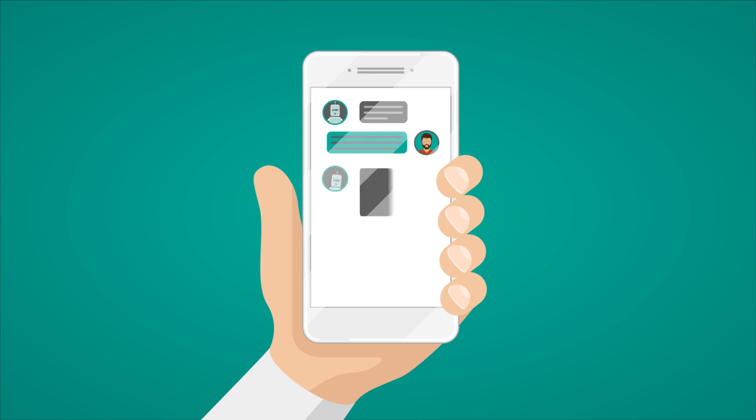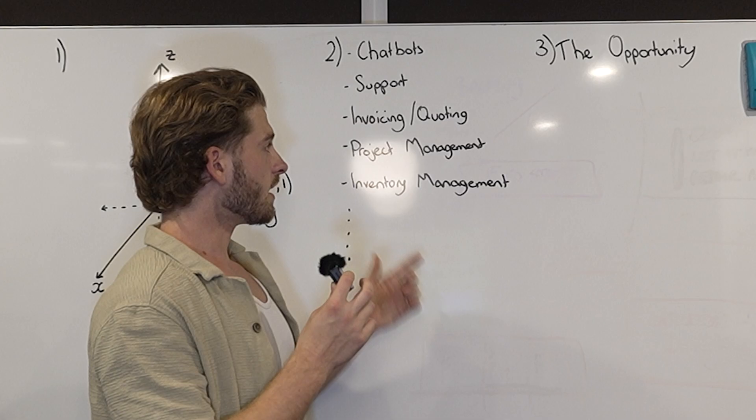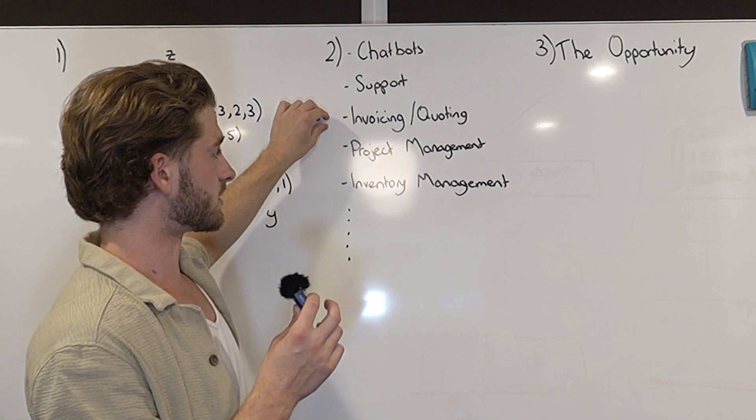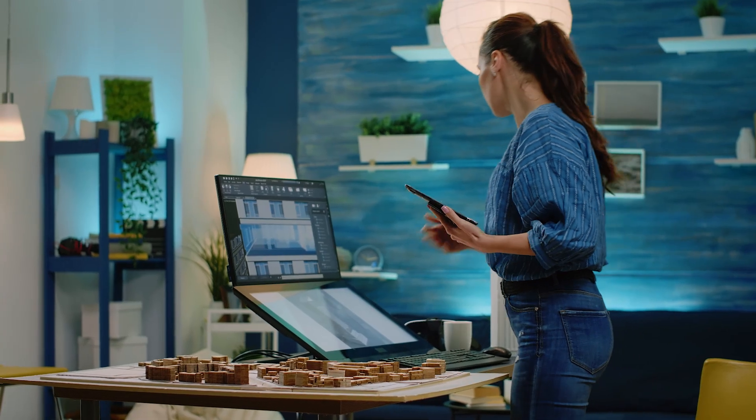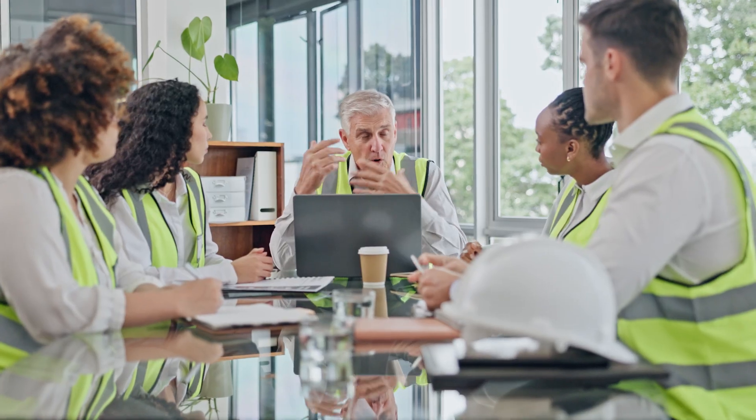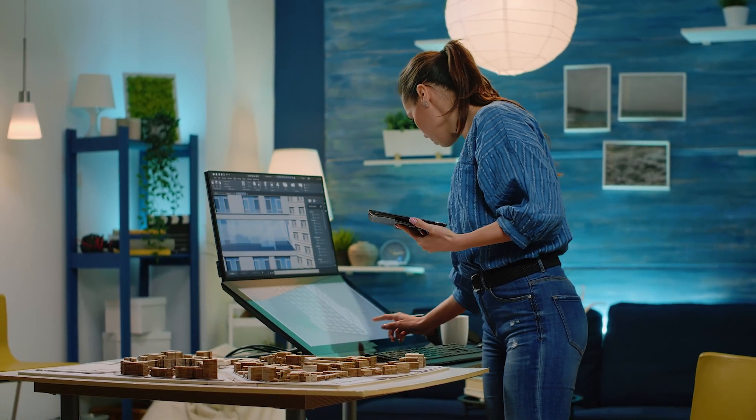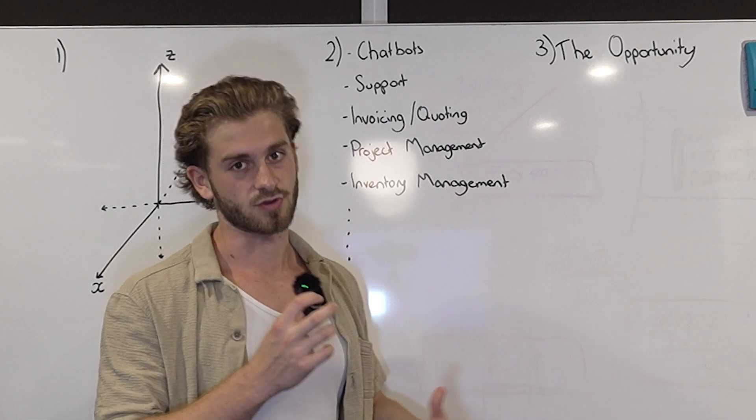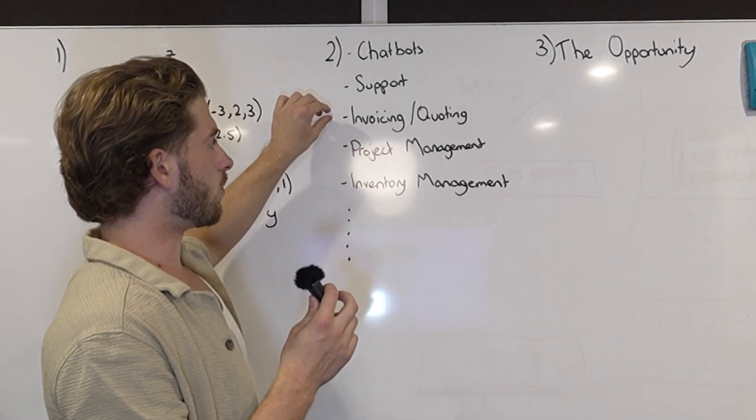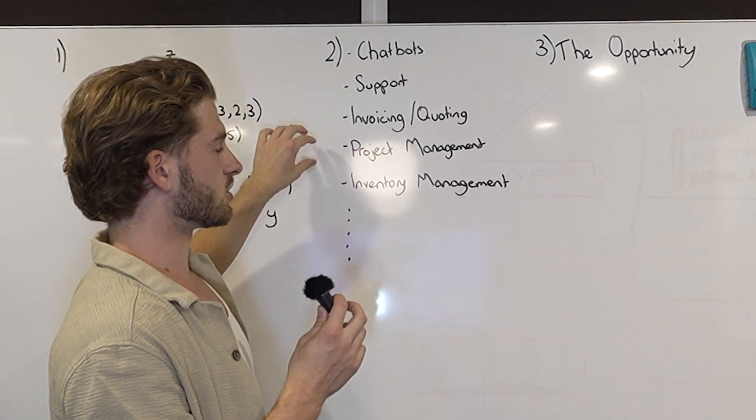You could for example set up a support chatbot for your company that saves your admin team or your staff from having to manually answer support requests all the time. Another one can be invoicing and quoting. If you're a company that sends out a lot of invoices or quotes, let's use a construction company for example.